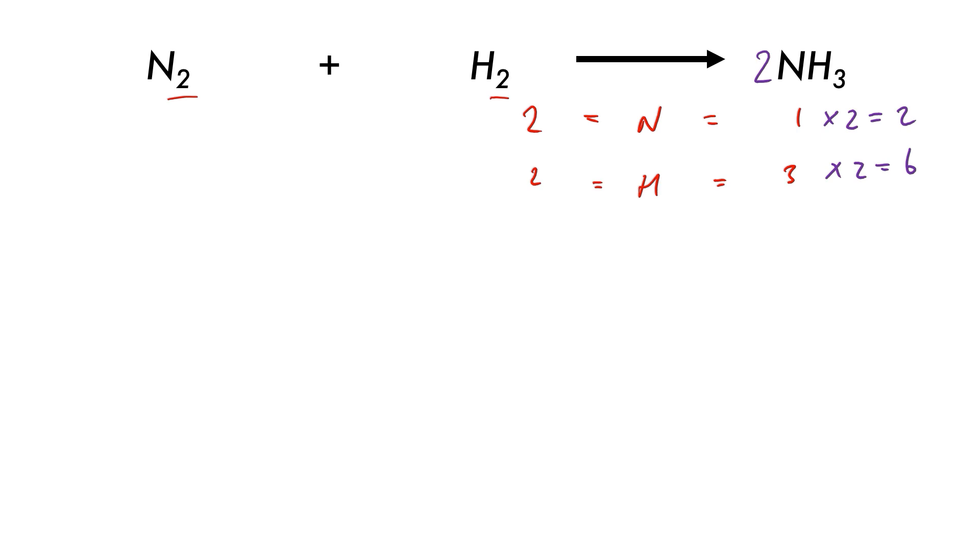So we now need to check our reactants. We have the correct number of nitrogens already. We have two nitrogens, so that's okay. But we don't have enough hydrogens. To get to the correct number of hydrogens we need to multiply by three to get six hydrogens.